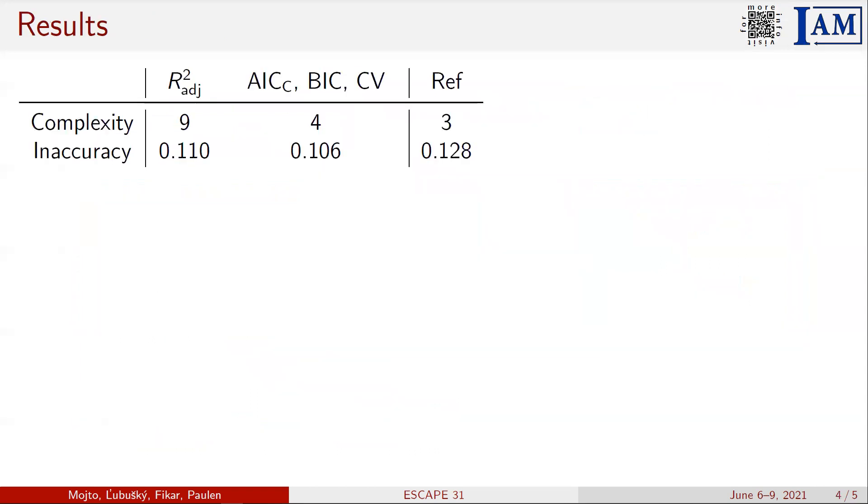The results indicate that the subset selection with corrected AIC, BIC, and cross-validation suggest the same inferential sensor. In this table we can directly see that the complexity represented by the number of input variables and accuracy given by RMSE of this sensor is improved compared to the subset selection with adjusted R squared criterion.